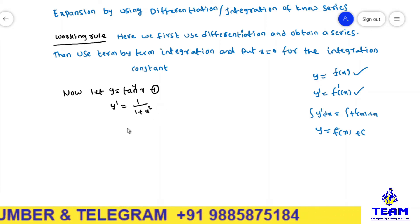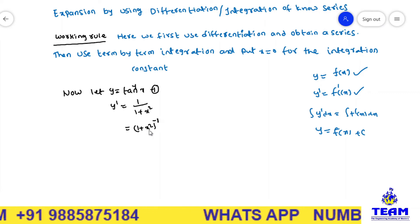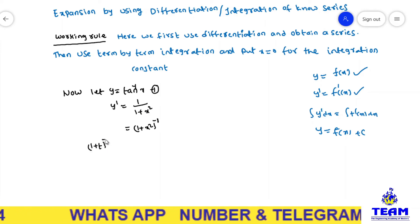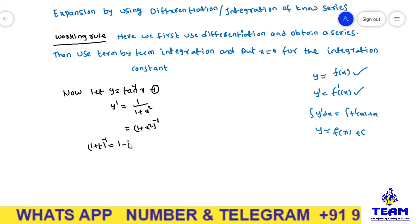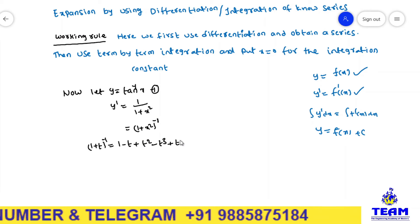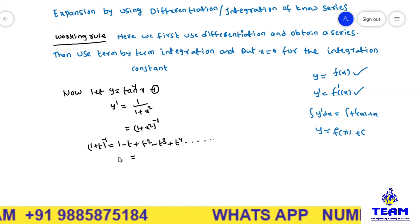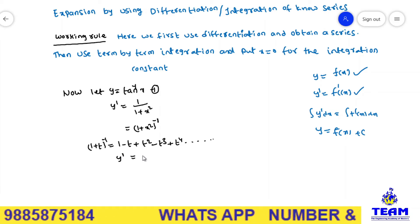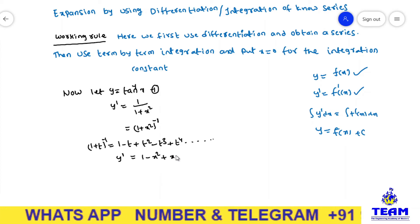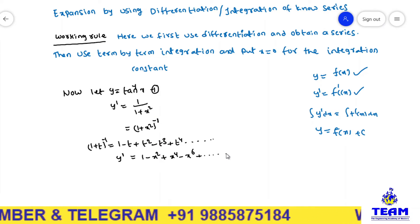This 1 by 1 plus x squared can also be written as 1 plus x squared whole inverse. We know the binomial expansion: 1 plus t whole inverse equals 1 minus t plus t squared minus t cubed plus t to the power of 4, and so on. In place of t, we have x squared. So y dash equals 1 minus x squared plus x to the power of 4 minus x to the power of 6 plus so on.